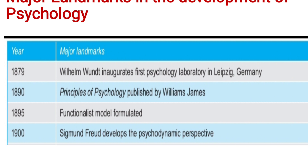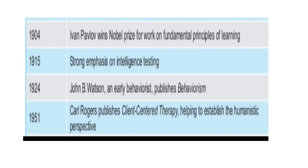In 1900, Sigmund Freud developed the psychoanalytical or psychodynamic perspective theory, where unconscious and subconscious drives are given more importance in influencing behavior. In 1904, Ivan Pavlov won a Nobel Prize for work on fundamental principles of learning — we will cover Pavlov's experiment in our separate unit on learning. In 1915, there was a strong emphasis on intelligence testing, with many intelligence testing scales developed from that time.